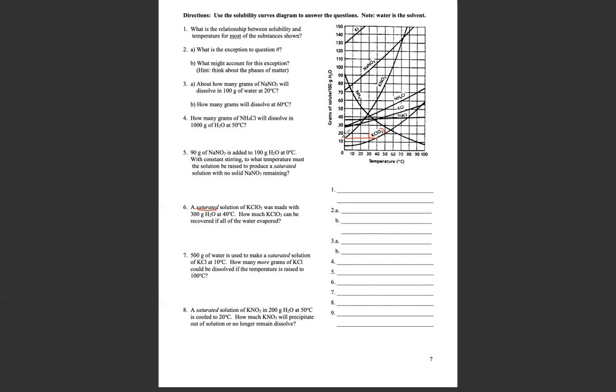And that looks like it is at about between 10 and 20, about halfway between. So that is going to mean 15 grams of solute per 100 grams of solvent. So that looks like our solubility is 15 grams of KClO3